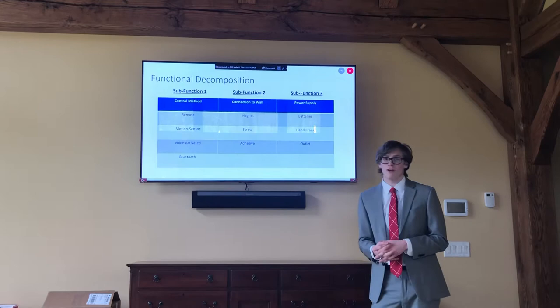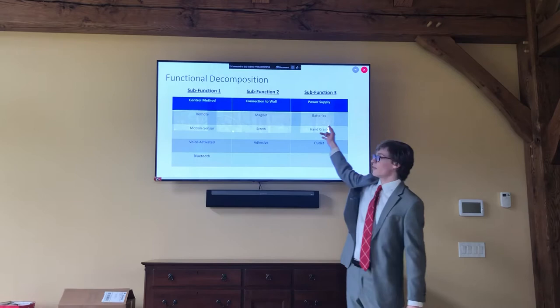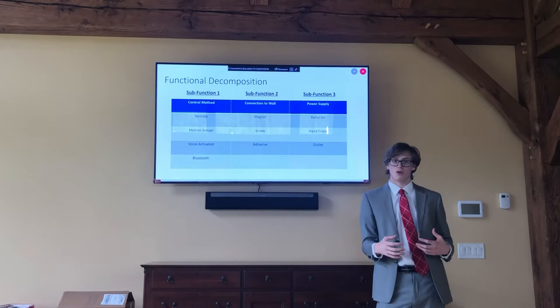Now going into the functional decomposition. There were three different functions we mainly focused on when looking at this product. The first was the control method, the second was the method of connection to the wall, and the third was the power supply. These three sub-functions we found to be crucial to the Hokie light switch.